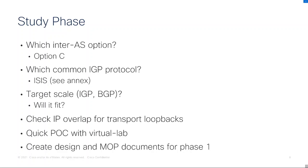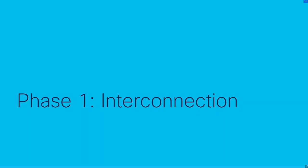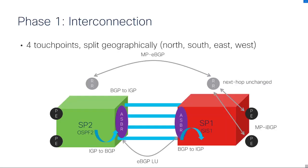Once the virtual lab validation was done, we were able to create the associated documentation: the high-level design, the low-level design, and the migration plan. Then let's discuss the first phase — the interconnection part — which was the first thing we did for this project.